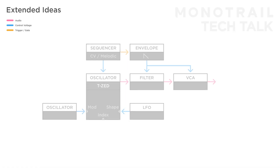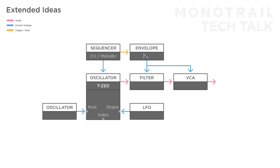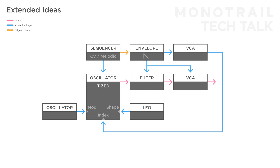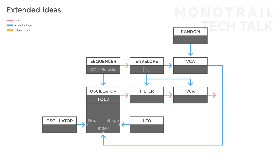Despite the built-in VCA, it can be worth it to experiment with more modulation before modulating the index. In this basic setup for example, you can send another copy of the envelope to an external VCA before going on to the index. Then you can modulate the amount of envelope passing on by sending something like a random voltage to that VCA. To add some extra dynamics, modulate the decay of the envelope with another random voltage.